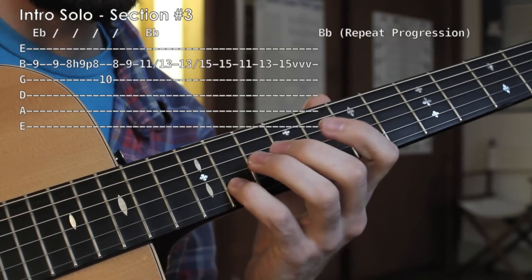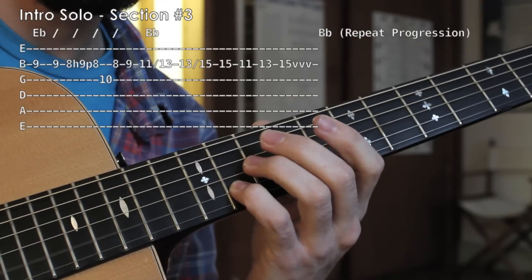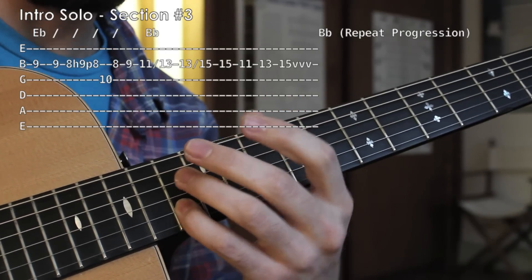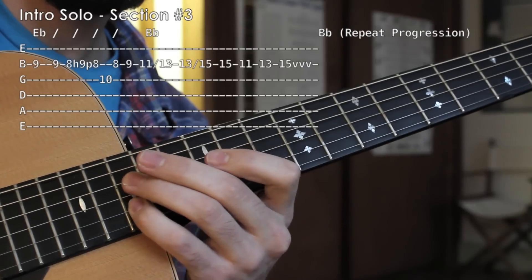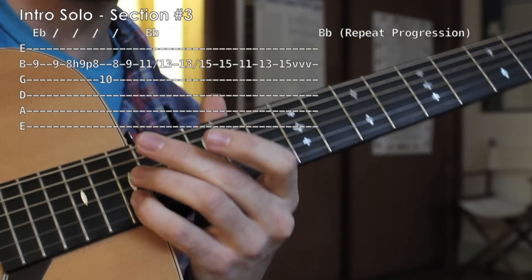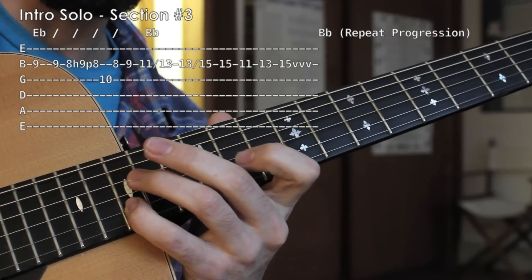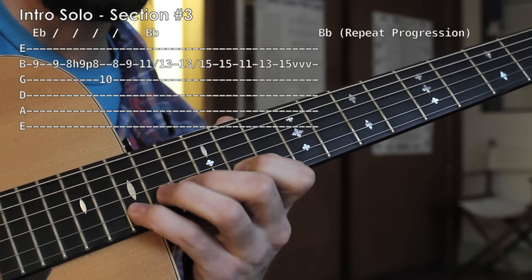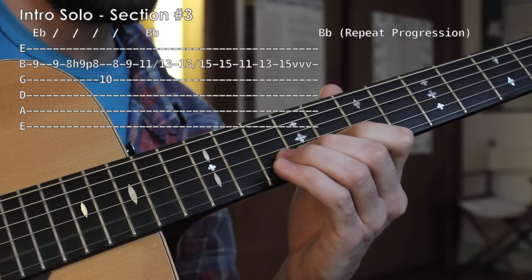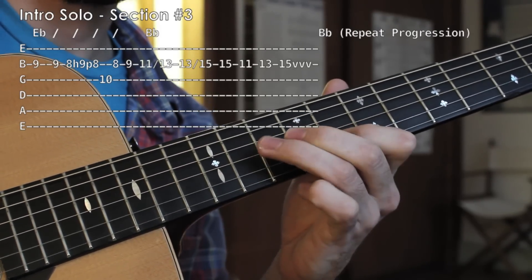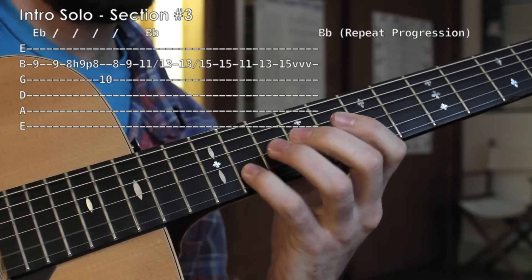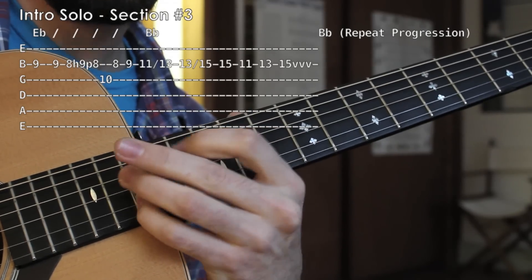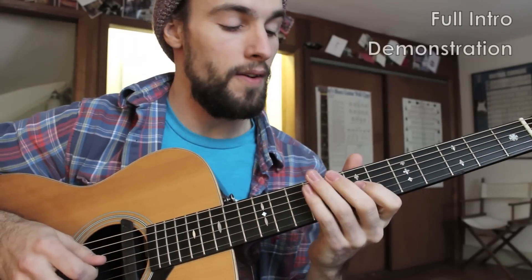Now I'm going to take my pinky and slide from the eleventh fret up to the thirteenth. Then I'm going to slide again, picking that thirteenth fret and sliding up to the fifteenth fret. And then I'm going to play that fifteenth fret once by itself before cruising up that same exact scale. Eleven, thirteen, fifteen. One, two, three, and four.